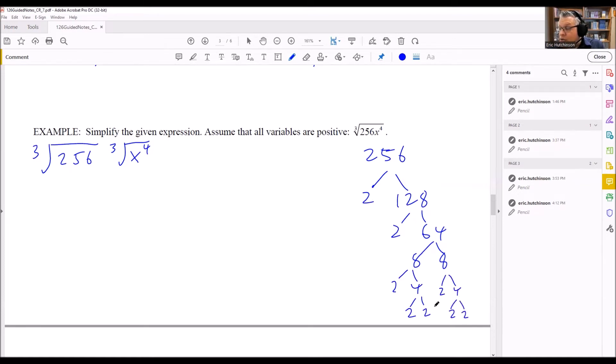So we end up with a bunch of 2s here. Let's count them all—we have 1, 2, 3, 4, 5, 6, 7, 8 2s, which means that we can write this as 2 to the 8th power, and then we'll just leave this as the cube root of x to the 4th.